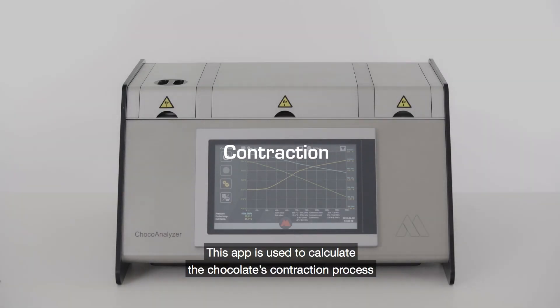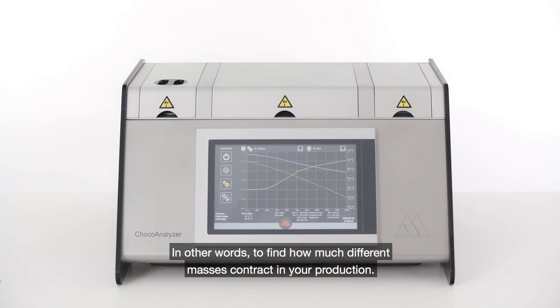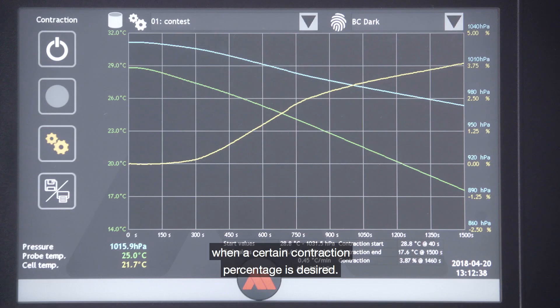This app is used to calculate the chocolate's contraction process when put through a specific cooling progress. In other words, to find how much different masses contract in your production. It can also be used to find the ideal tempering index for the chocolate when a certain contraction percentage is desired.